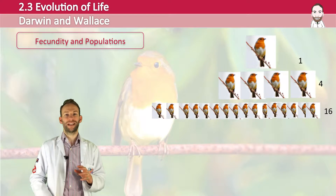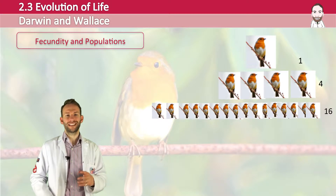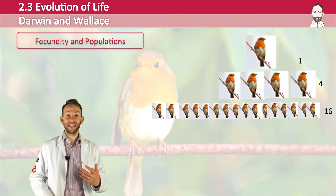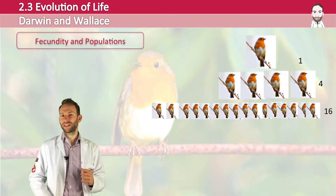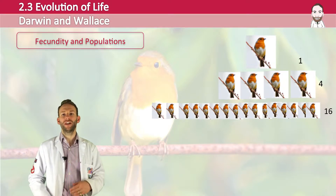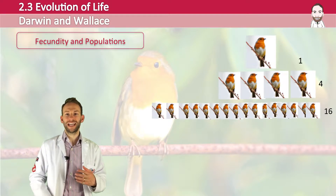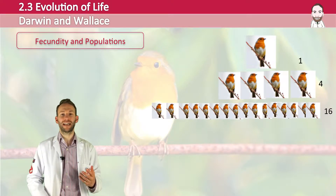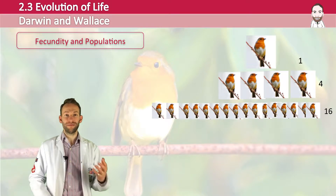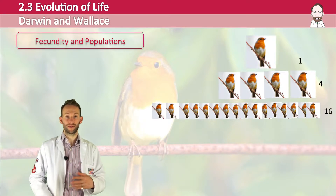Let's start with fecundity and populations. Fecundity is the word for the reproductive rate of an organism — how quickly they reproduce. Darwin noticed that organisms tend to overproduce, producing more offspring than they need to. However, population size doesn't really change — it stays roughly stable. For example, a robin usually lays a clutch of four eggs. If all survived and each laid four more, there would be 16, and after 10 generations there would be over 1,048,576 robins. This clearly doesn't happen, otherwise the world would be overrun very quickly.